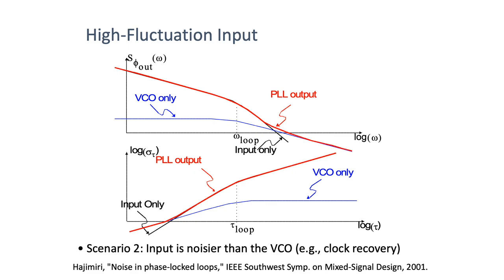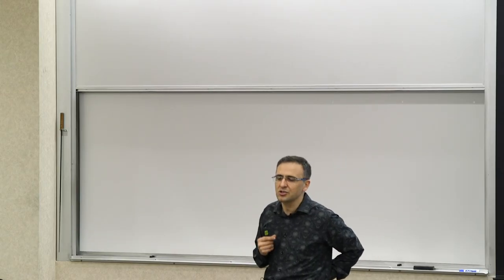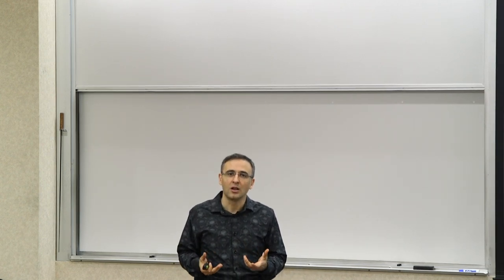Within the loop bandwidth, you will follow and regenerate the timing variations of the input, which are due to the random data. But outside the loop bandwidth, you get the lower phase noise of the VCO. Similarly, the timing jitter at small timescales would be smaller and at longer timescales would be larger. Now the question is: for a frequency synthesizer, would you make the loop bandwidth larger or smaller?